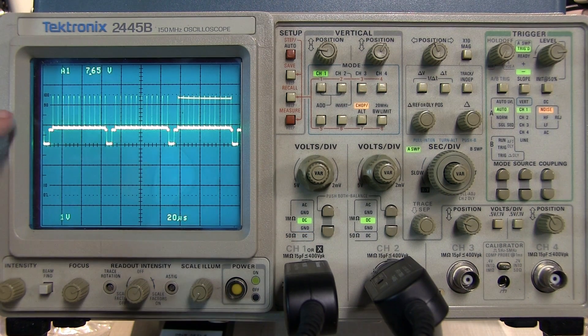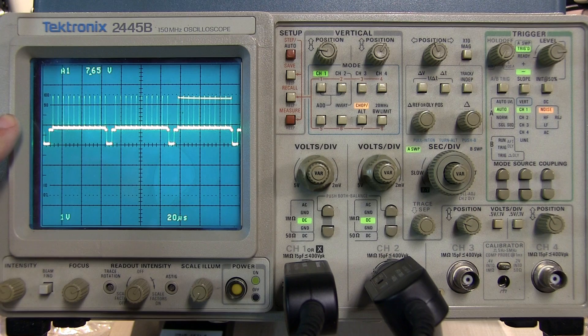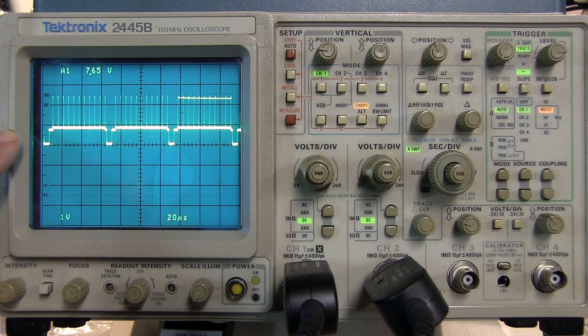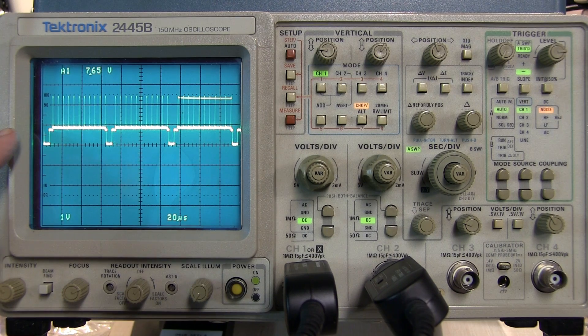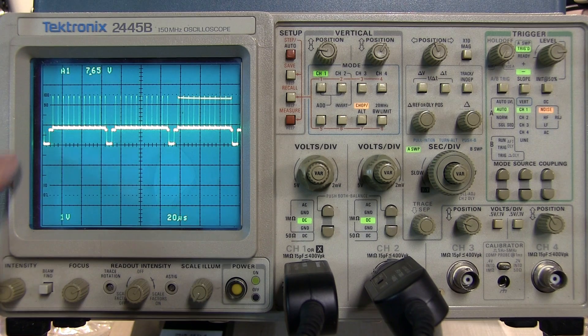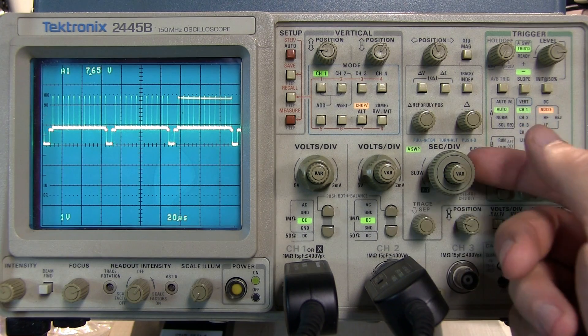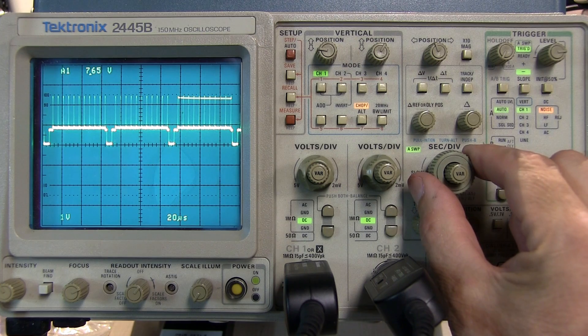Now to take a look at the delayed time base I put a more interesting signal on the scope. This is an NTSC test pattern coming from a signal generator used to test old TV sets. So the delayed time base is enabled by simply pulling on the seconds per division knob.